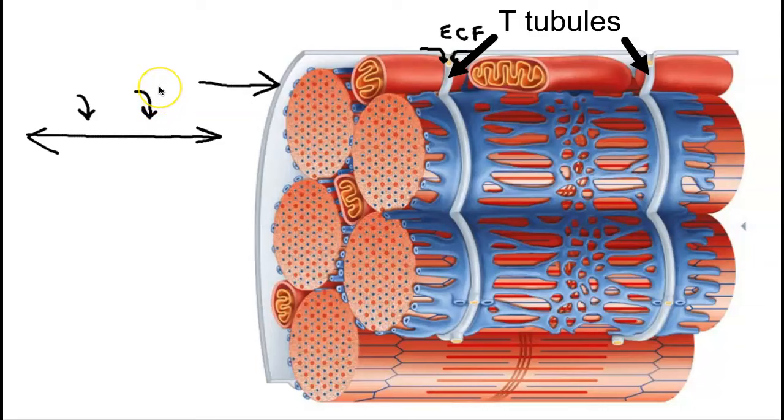T-tubules, like the SR, surround every single myofibril. We can see the T-tubule coming in, and the T-tubule surrounds a myofibril—it actually surrounds every myofibril.